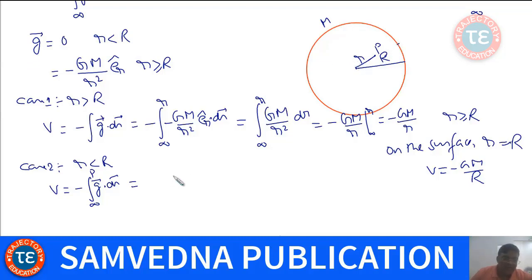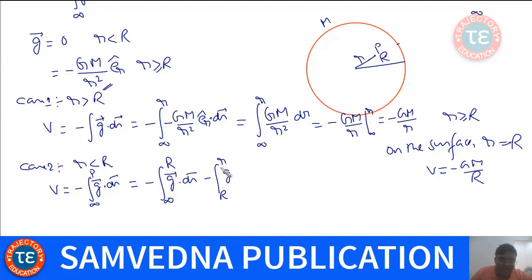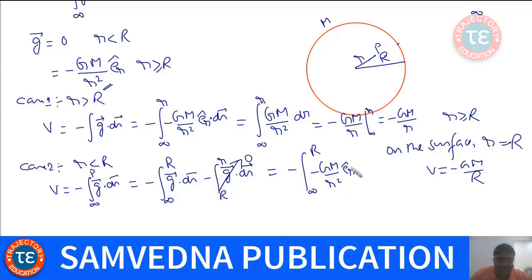From infinity to the surface, G equals -GM/R² (E_R), and from the surface to the interior point, G is zero. So we integrate each part separately.